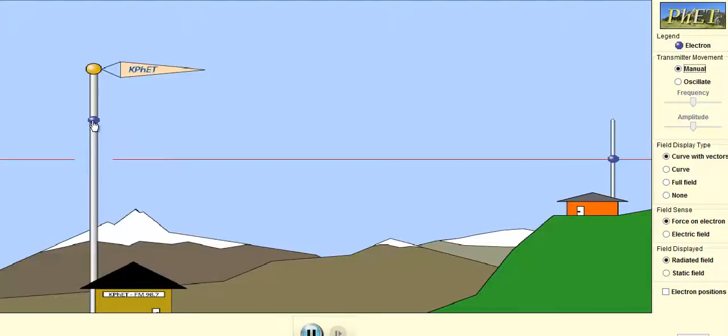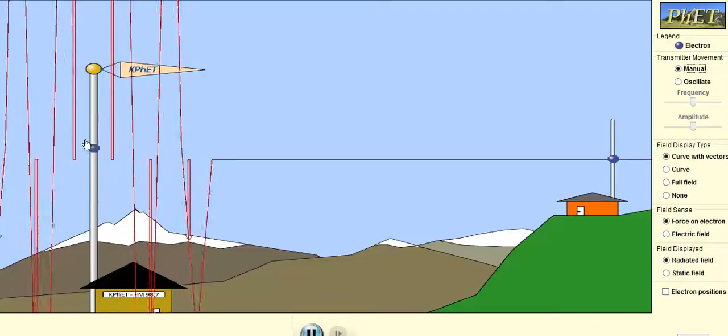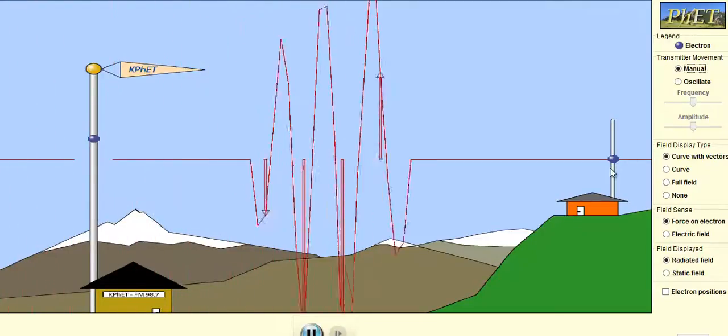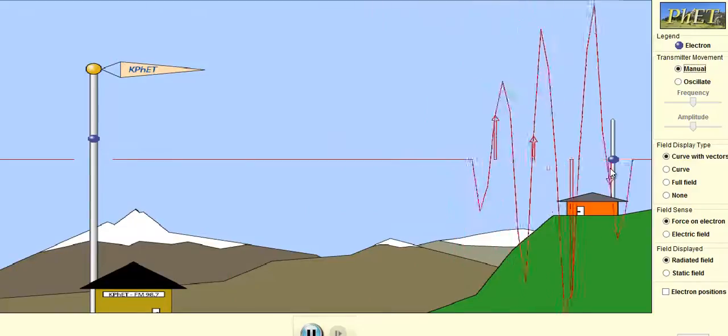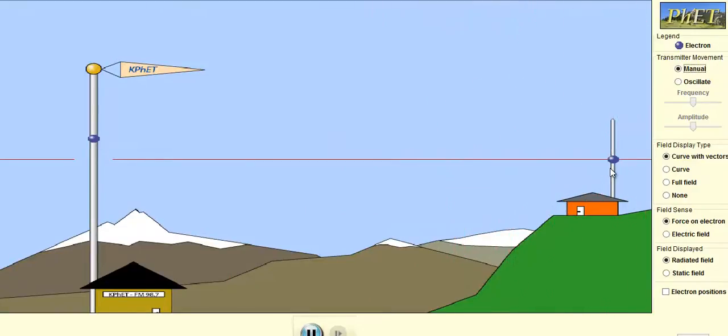So students often get confused between radio waves and sound waves because your radio makes sound, but the signal coming from the station is an electromagnetic wave, a radio wave. And as you can see, it's transverse, but then that radio in your house takes that transverse radio signal and converts it into a longitudinal sound wave, which then you can hear with your ears.